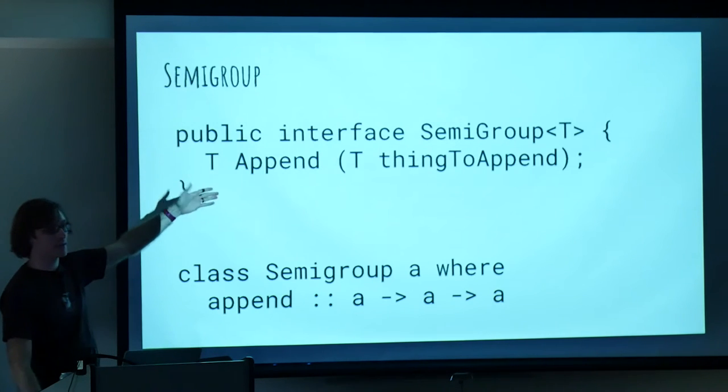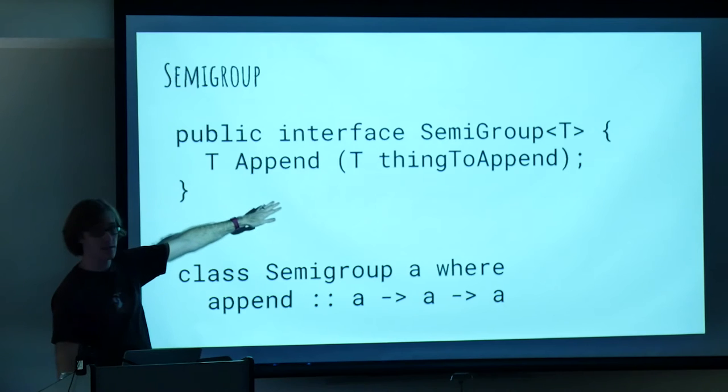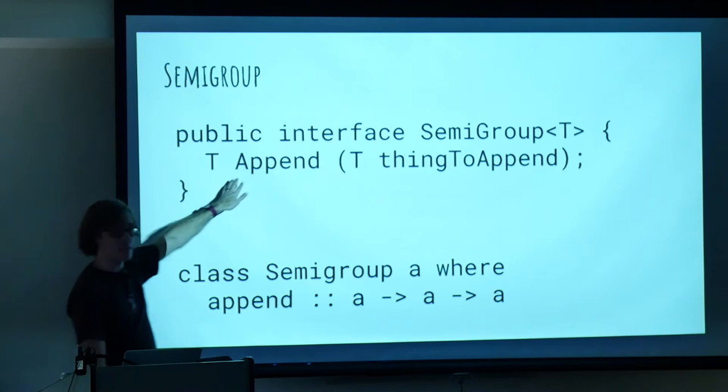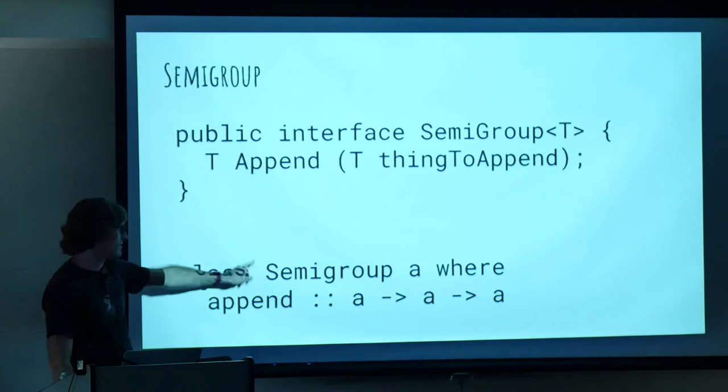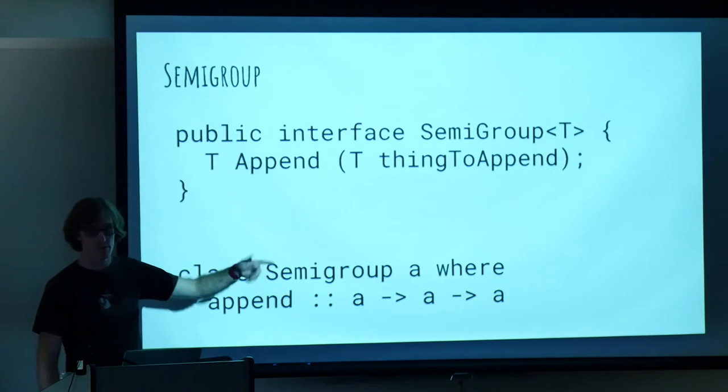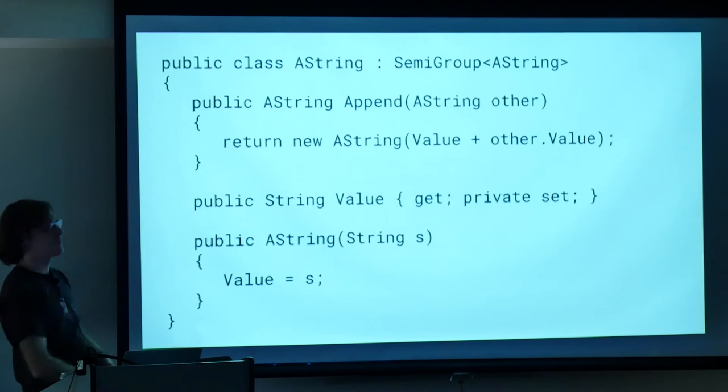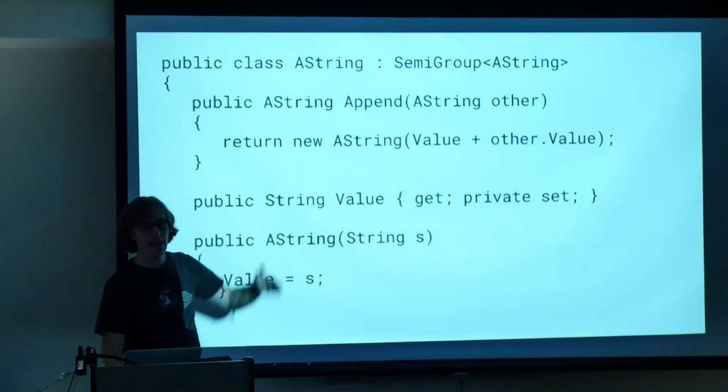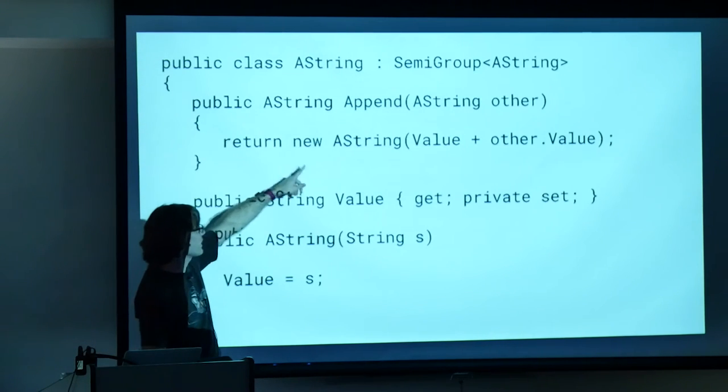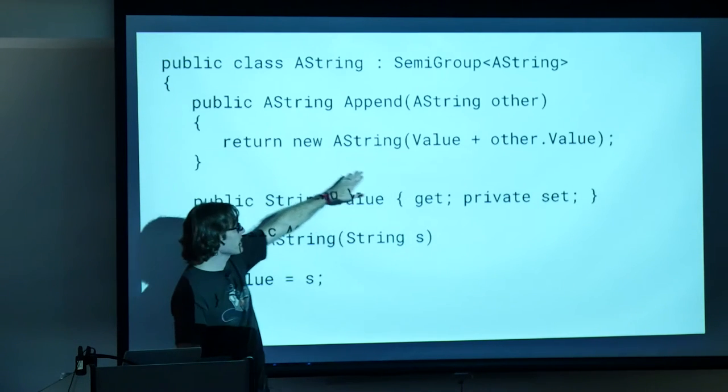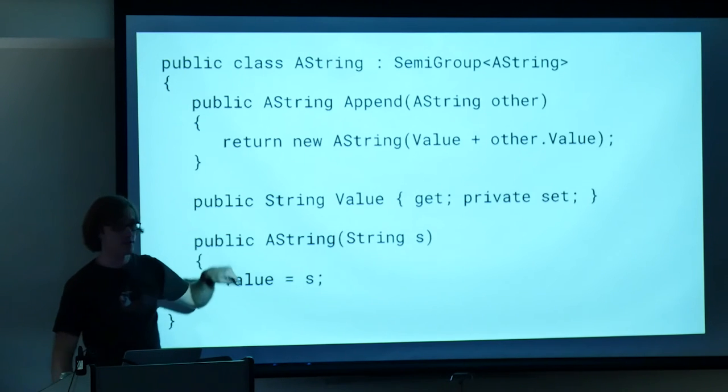So a semigroup is just, from a C# perspective, we can't really do this in JavaScript. I guess I could have done flow type annotations, but I'm just going to use C# here. So we have an interface semigroup that has a function append. So you have a semigroup of some type T that takes another T and returns a T. So it takes two of the same thing and returns one of the same thing. And if this was Haskell or PureScript type signature, it would look like this: append takes an A and an A and returns an A. With me so far?